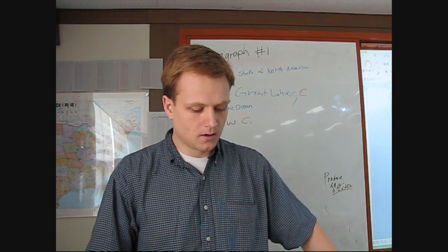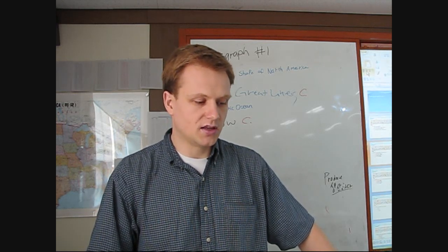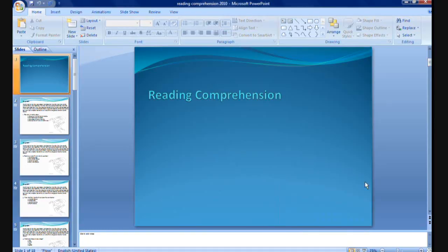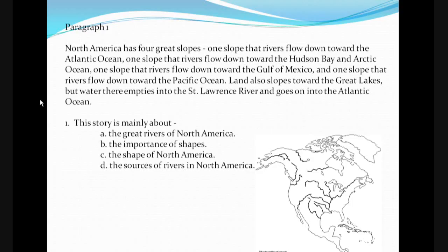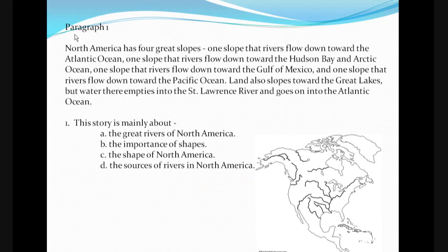First of all, what you want to do is open your PowerPoint and open the presentation you want to use. I'm using this reading comprehension presentation. As you are reading the paragraph or explaining different things, you can just hit Control+P on your keyboard and when you do that it gives you this little pen on your cursor, and it allows you to underline things or circle things or whatever you want to do.